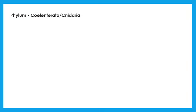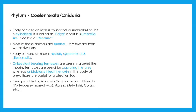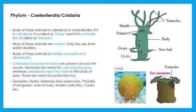The next phylum is Coelenterata or Cnidaria. These are multicellular, diploblastic organisms without cell wall, having radial symmetry. Most of them are marine. The body is cylindrical or umbrella-like — cylindrical body is called a polyp and umbrella-like is called medusa. The body of hydra is cylindrical, whereas jellyfish is umbrella-like. They have tentacles to catch prey and nidoblasts or stinging cells, which secrete and inject toxin into the prey. These are the organs of offense and defense.